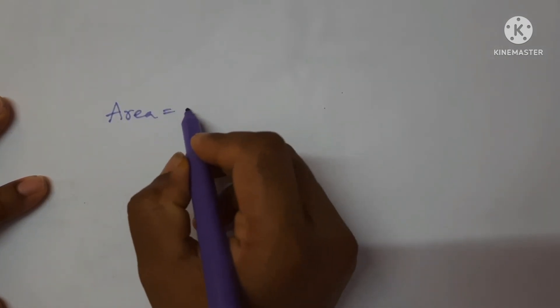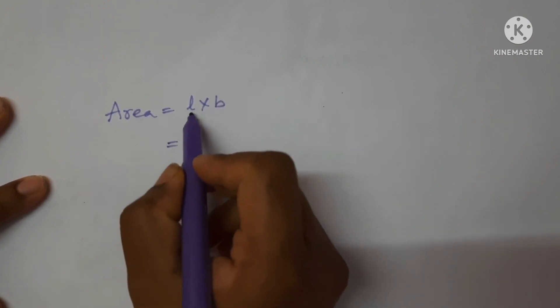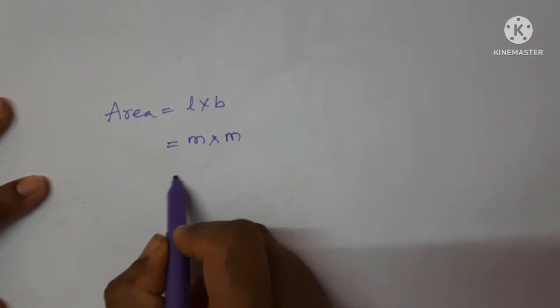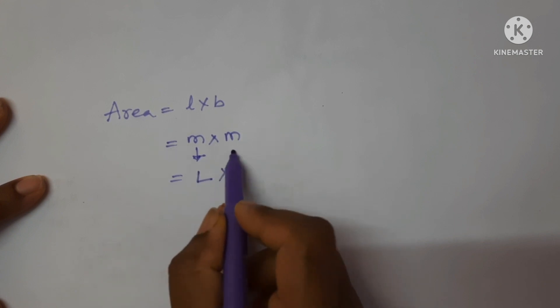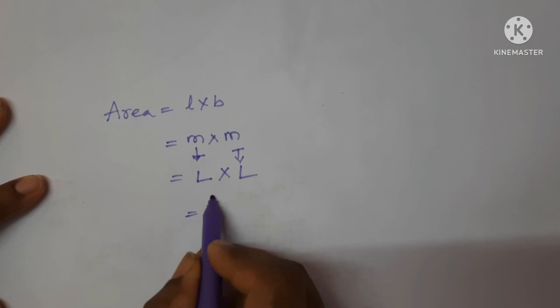Let's see, area equals length multiplied by breadth. The SI unit of length is meter and breadth is meter. So meter is expressed in terms of L and another meter is expressed in terms of L, which is L square.